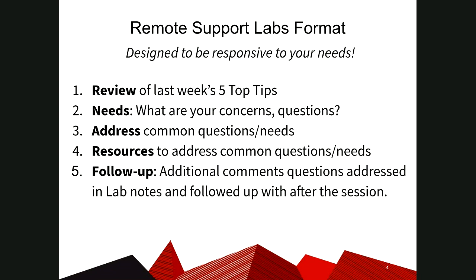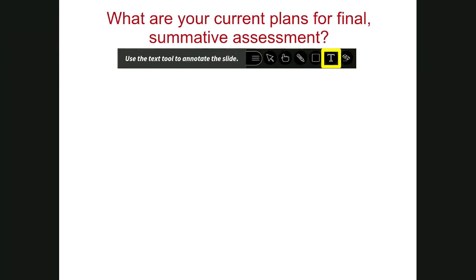Let's get started by using that annotation tool up here in the top left. If you click on that T, you'll open a little color bubble to the right of that annotation panel. You can type after you click on that T — just click right on the screen and start typing. What are your current plans for your final summative assessments for this semester, for spring semester? Let's start to see what people have in mind.